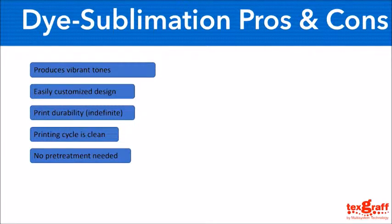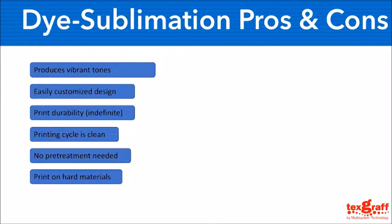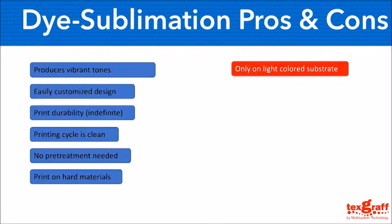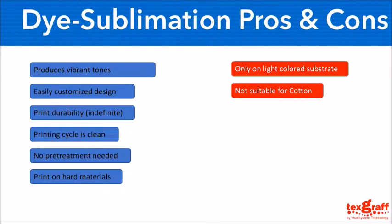The materials used do not necessarily have to be fabrics — you may sublimate on hard surfaces like ceramic mugs, accessories, key chains and much more, but make sure these hard materials are coated for sublimation. The cons of dye sublimation are that you mainly sublimate on light color substrates due to the fact that there is no white ink. Sublimation is also not an ideal solution for cotton, unlike DTG. The last disadvantage is that dye sublimation only gives a color pop after transfer — basically the colors on the sublimation paper do not show their exact vibrant color until you heat press it onto the substrate.